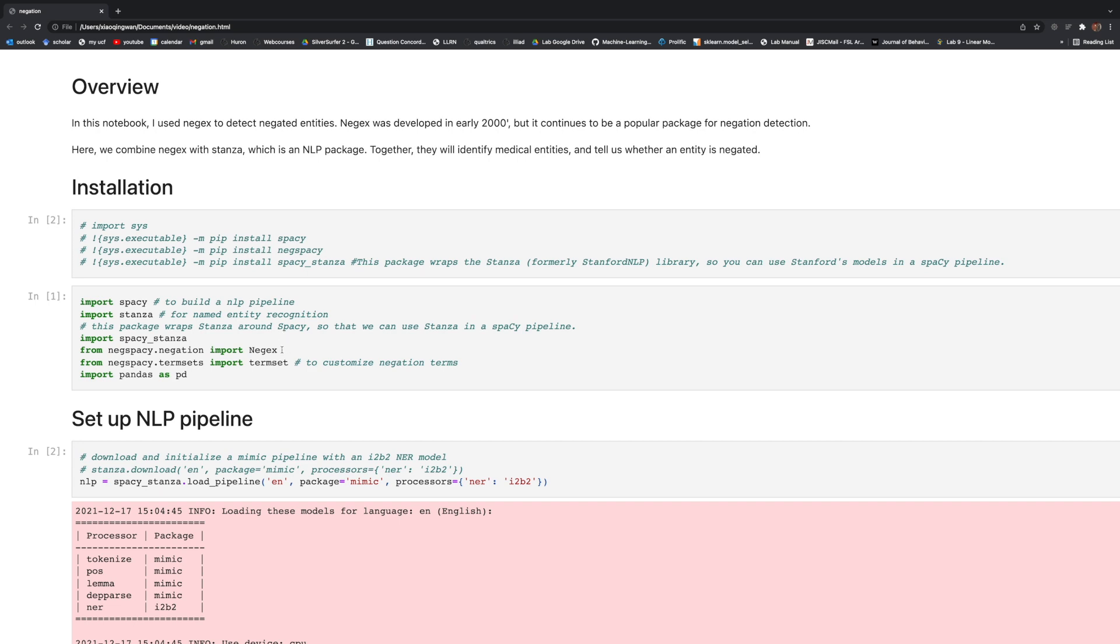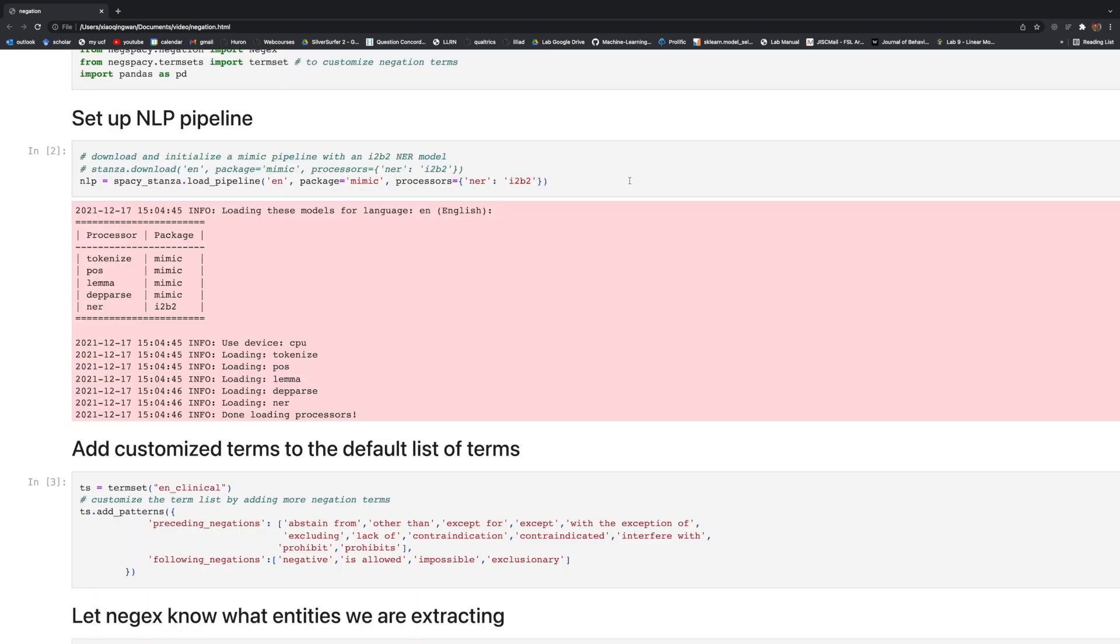We need to import NegX as well as termset so that we can customize the negation terms. In the next block, I'm setting up my NLP pipeline. The entities we're detecting here are medical entities. You can easily swap out the NLP pipeline to something else.